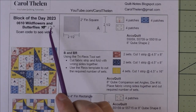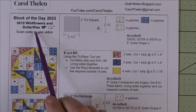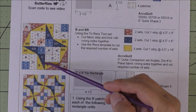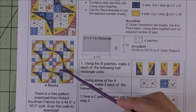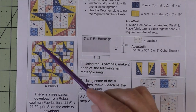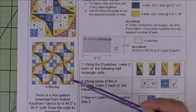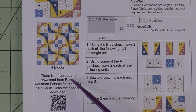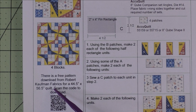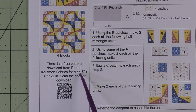This is a 12 inch block called Wildflowers and Butterflies. Here is the diagram, and here are four blocks set block to block, so you get a little curve and fluttery looking design going on.